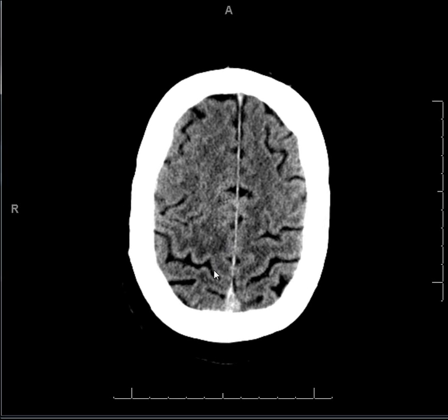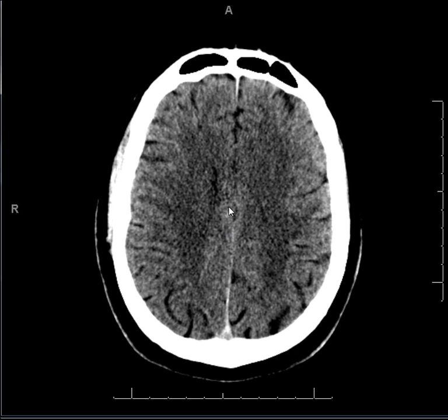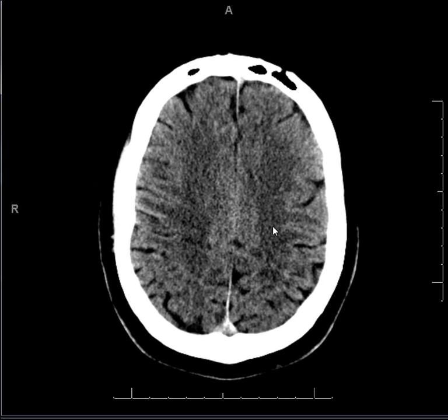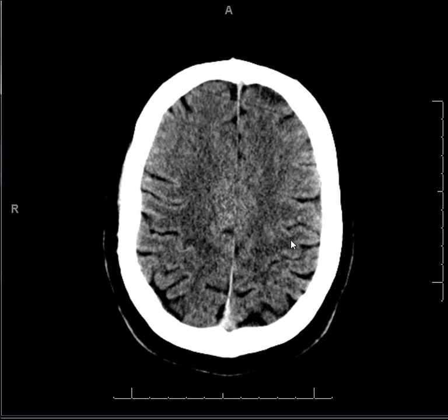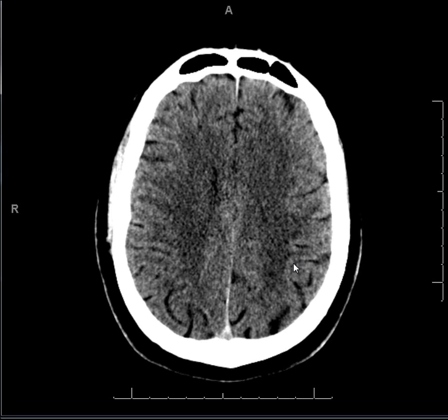A third thing to interpret on this window is the subarachnoid space, which is the space between the gyri — we're looking at the sulci. Like the ventricles, which are black, these sulci contain CSF and are black. You want to make sure the sulci are present and not effaced, which would be a sign of intracranial hypertension among other etiologies. Also make sure they are CSF equivalent — higher density within the subarachnoid spaces is abnormal and denotes hemorrhage.